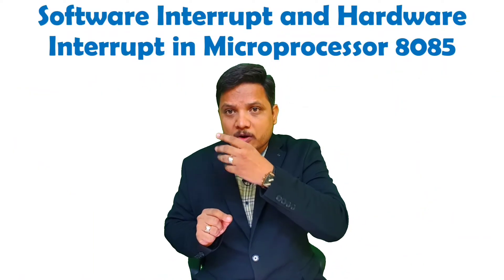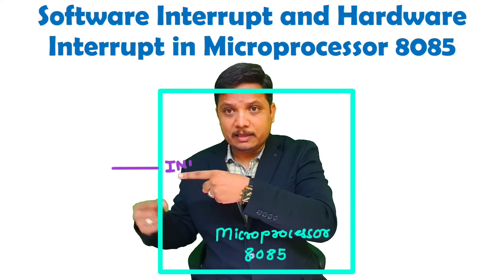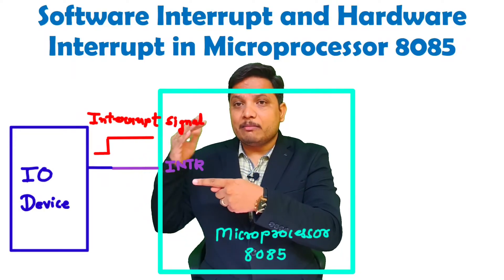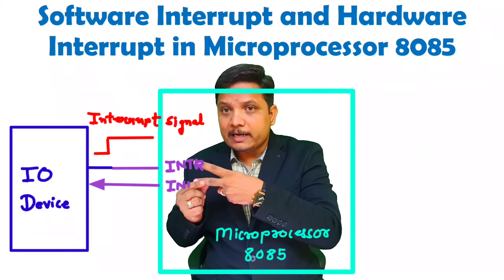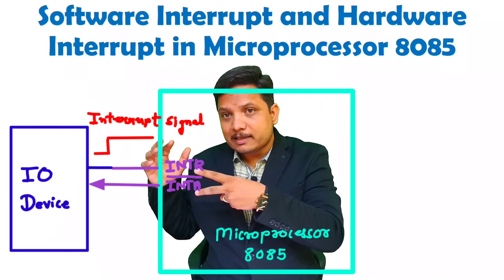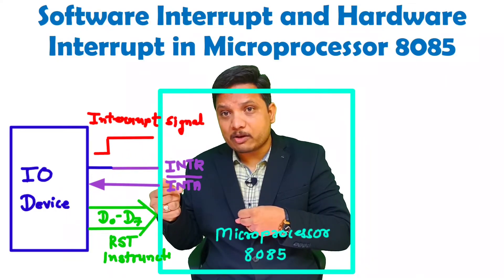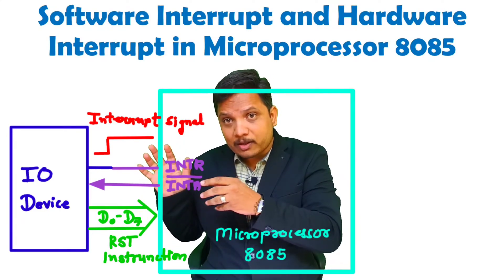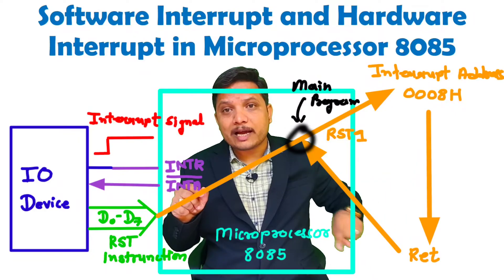When we talk about software interrupt, the microprocessor receives an interrupt from an external device. The microprocessor gives an interrupt acknowledgement to that device, and upon receiving acknowledgement, the device gives an instruction to the microprocessor. Based on that instruction, the microprocessor transfers control to the service routine.